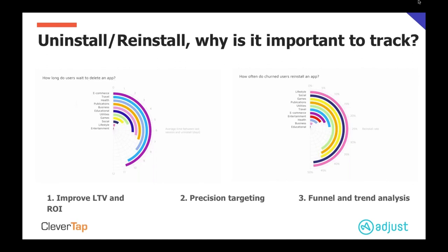This goes back to performance tracking. You have great campaign ideas to get users back, but to track the performance and efficacy of those campaigns, you first need to figure out when, how, and why users uninstall. Once you have that data and go back to networks to retarget them, you need to track their reinstall rate — especially important when vetting different campaigns and creating quality control to make sure they're working as intended, particularly when you're spending money on them. Uninstall and reinstall tracking are very important to get good funnel and trend analysis.